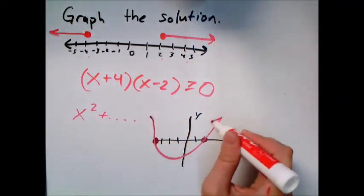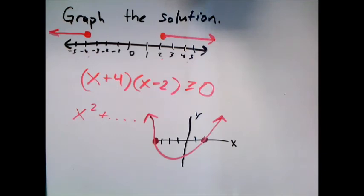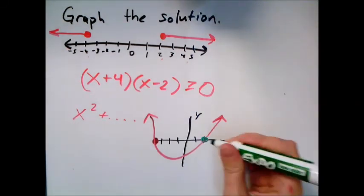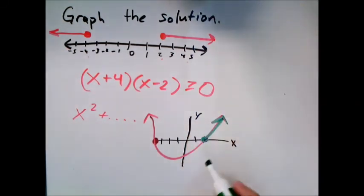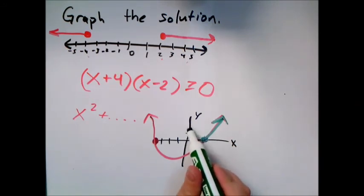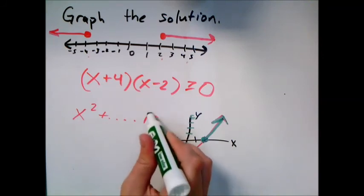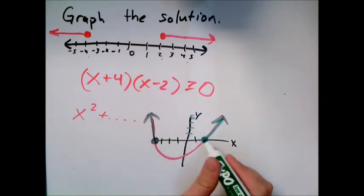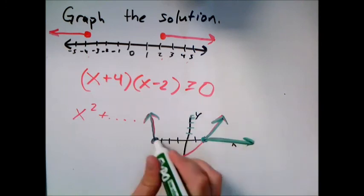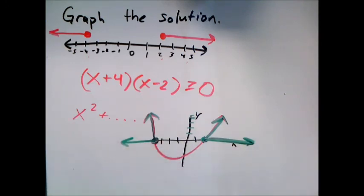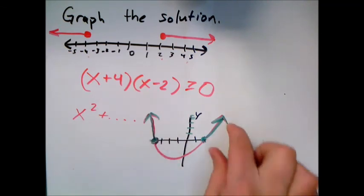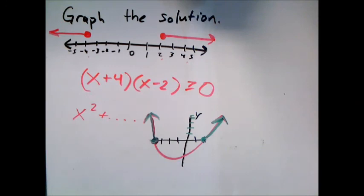Does the parabola open up or down? Since x times x gives positive x squared with no negative out front, it opens upward. So it looks something like this. They asked when it's greater than or equal to zero — that's where the output is above the x-axis, the positive y-values. So the solution is everything to the left of negative four and to the right of two. That's the quick way: just think about whether the parabola opens up or down, and identify where it's positive.